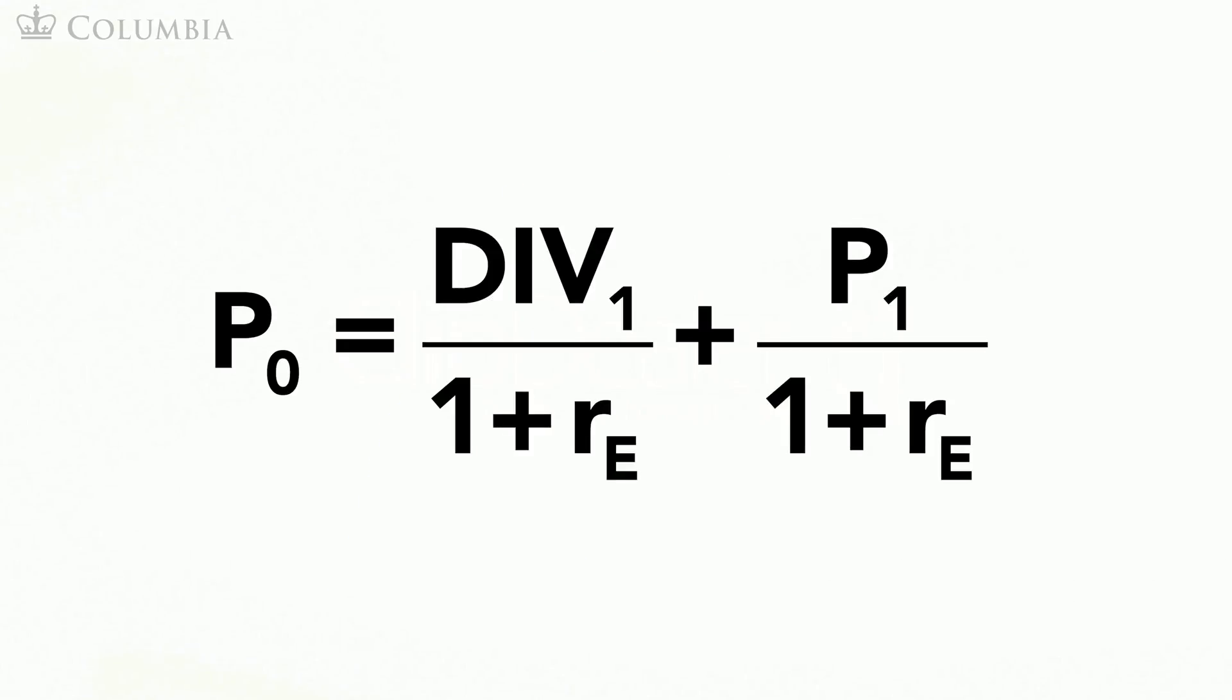While this formula is correct, it is difficult to apply as it requires knowledge of P₁, the price of the stock next year. If we do not know the price of the stock today, how are we supposed to know the price of the stock next year?